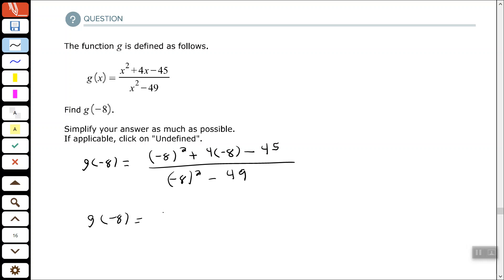So negative 8 squared, with negative 8 in parentheses: 64 + (-32) - 45 all over positive 64 minus 49.